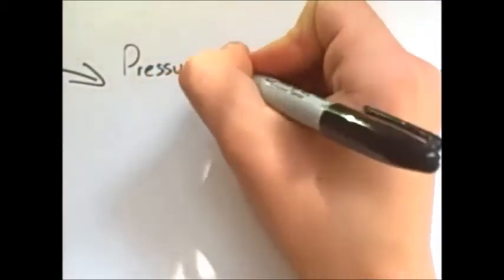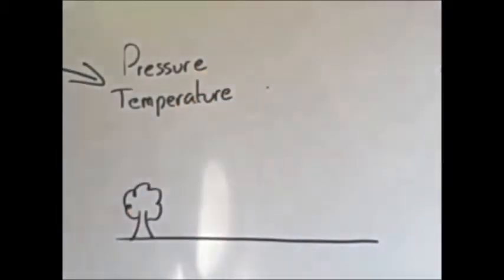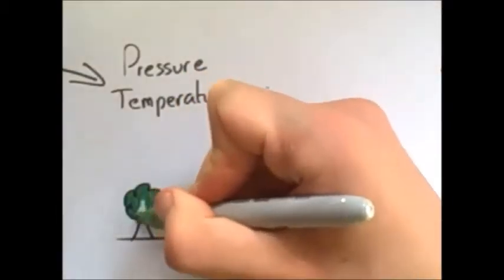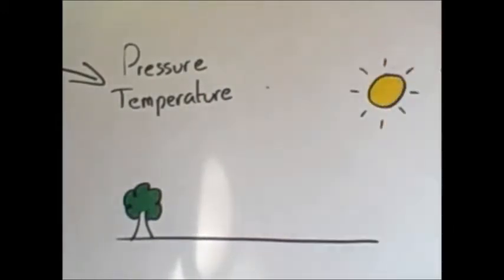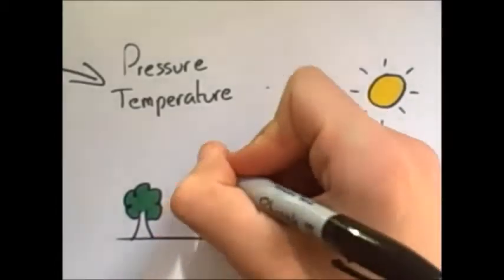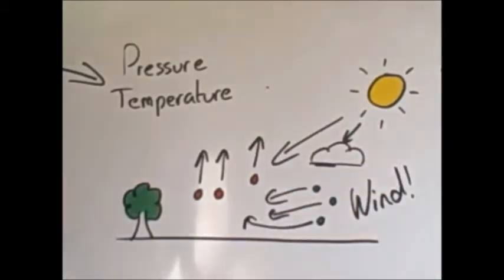The wind is made by the changing in pressure and temperature. As one area heats up quicker than the area next to it, it creates a difference in pressure, and this causes wind. You can see this on the weather report with the lines across the map with the H's and the L's on it. So as the air heats up, it rises and sucks in the new air underneath it, creating wind. So even on a sunny day, it can be really windy.